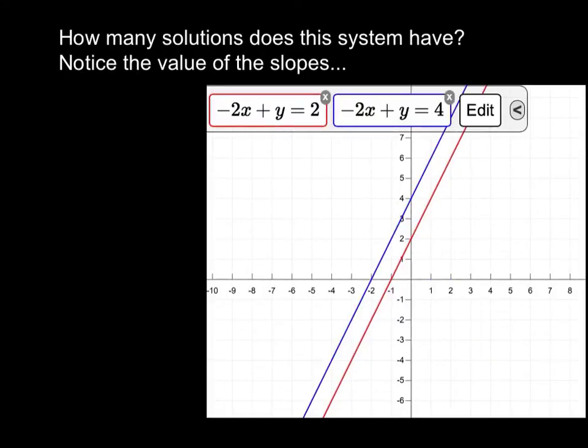Here's our next question we're going to look at. We're going to look at, in red, we've got negative 2x plus y equals 2. And in blue, we have negative 2x plus y equals 4. So the first thing you're going to notice is the value of the slopes.